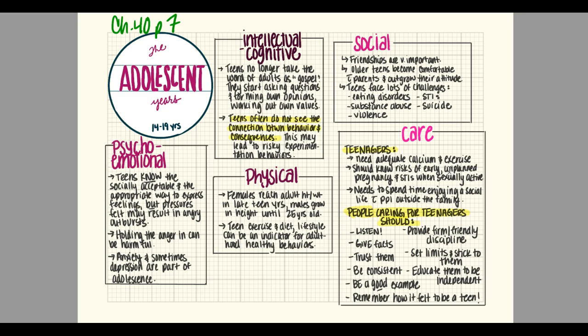For physical development, females will reach their adult height and weight in their late teen years. Males will grow in height until they're about twenty-five years old, though it's mostly set by eighteen or nineteen. Teens need exercise and a healthy diet. Lifestyle can be an indicator for adult healthy behaviors — how they live in their teen years can predict health or weight struggles in their adult years.